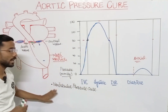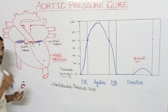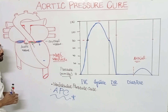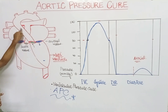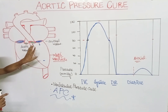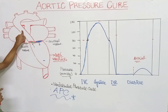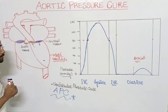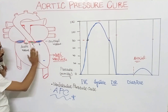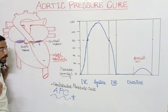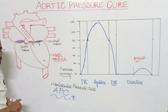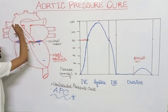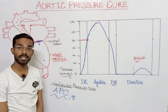Now the ventricular pressure curve description is complete. We will now discuss our main topic — the aortic pressure curve. This refers to the pressure that actually exists in the aorta across all four phases. During isovolemic contraction, there is no blood flowing into the aorta, so the blood already present in the aorta maintains a pressure of 80 mmHg.